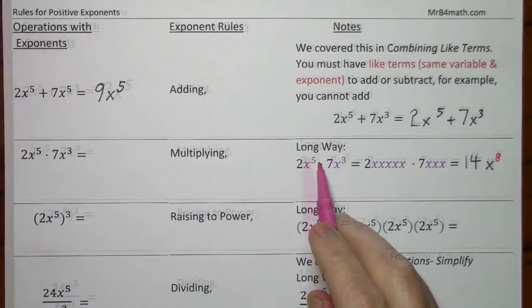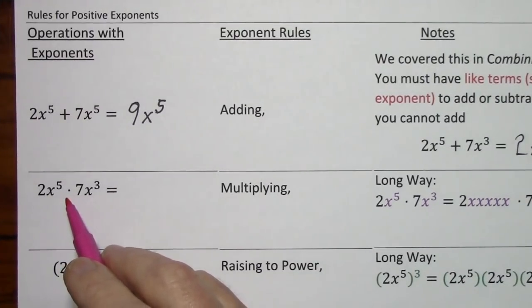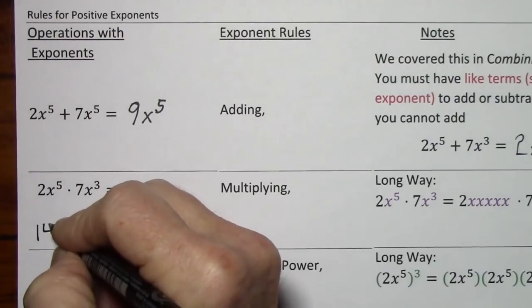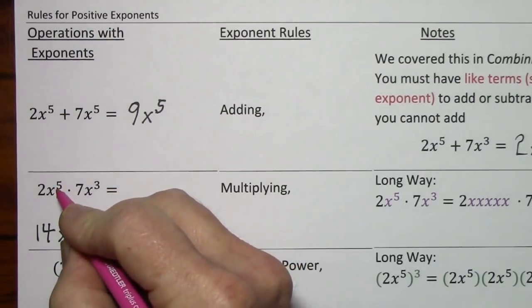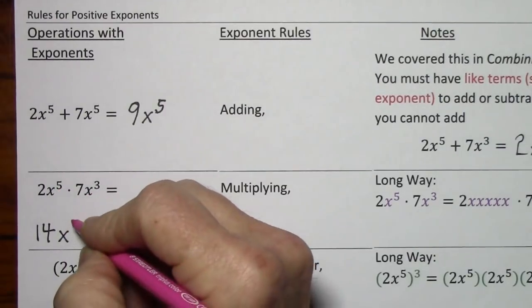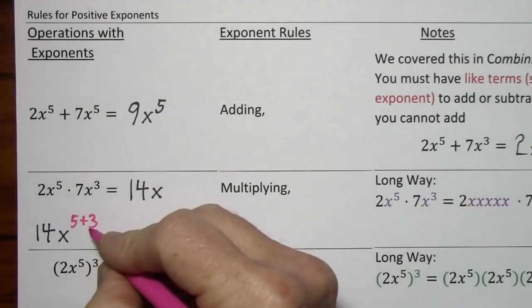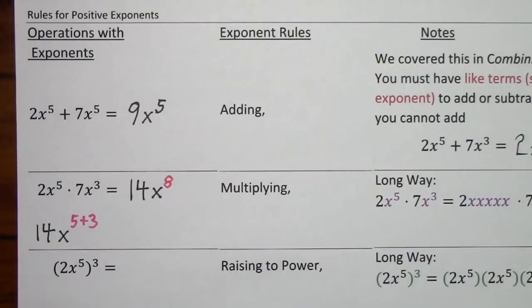But rather than the long way, we can use the product rule since we're multiplying. So 2 times 7 gives us 14, and the product rule says we can simply add 5 and 3. So this would give us 14x to the eighth.